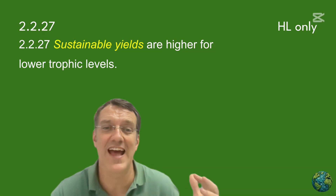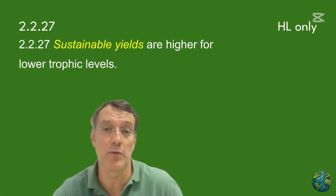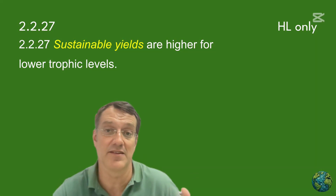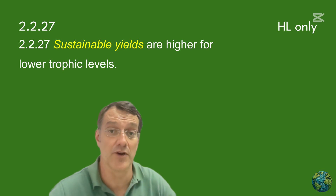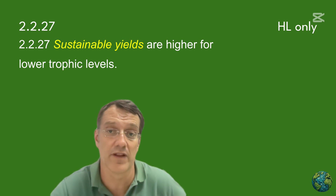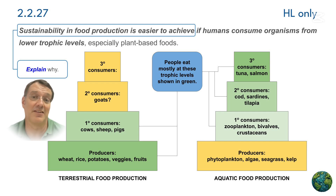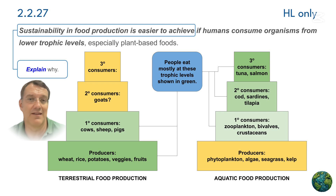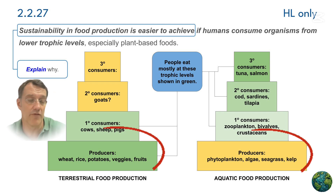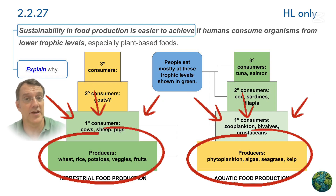One critical ethical consideration emerges when we recognize that sustainable yields are higher for lower trophic levels. This scientific fact has profound implications for food security and environmental justice. It's generally more efficient and sustainable to consume organisms from lower trophic levels, particularly plant-based foods.